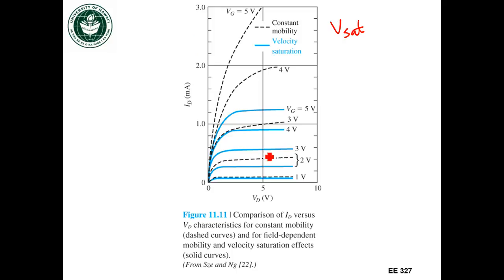The dashed curves are what the currents would be if we didn't have any velocity saturation, but the blue curves is what we would actually have if we do consider the effect of the saturation velocity.